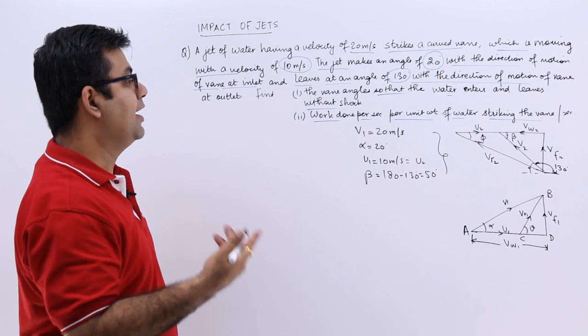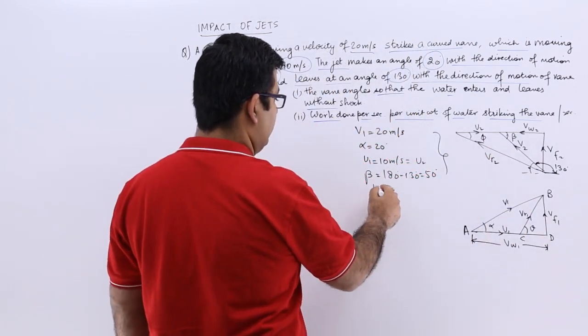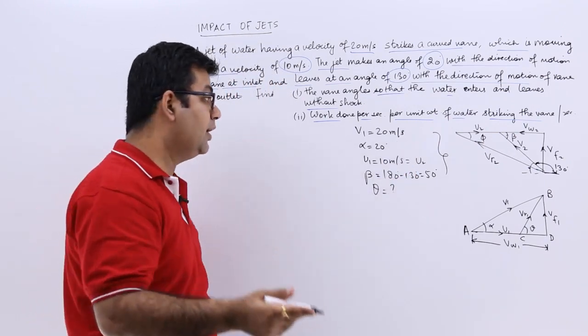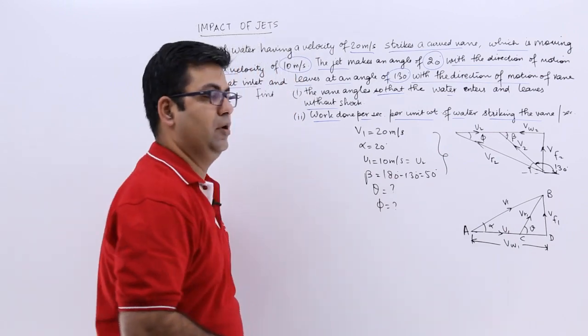We have to find the vane angles. Vane angles are theta and phi, so I have to find out theta which is the vane angle at the inlet and the vane angle at the outlet is phi. So these two things have to be found out.